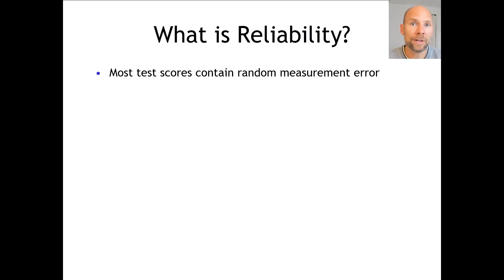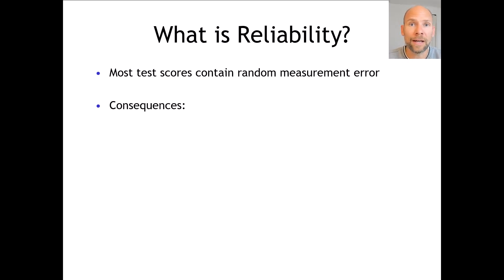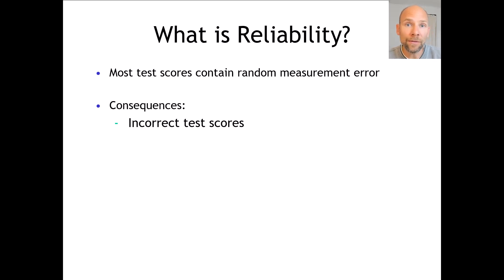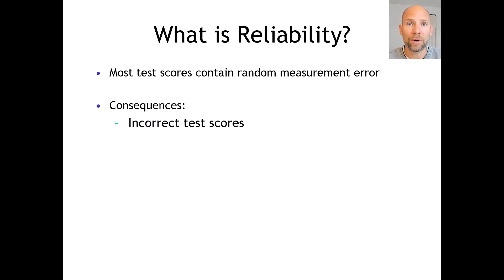In the following I will explain how that works technically based on classical test theory. Before we look at the theoretical foundation of reliability in classical test theory, I want to talk about some consequences of unreliability or random measurement error. One consequence is that test scores are more or less incorrect. For example, if we measure intelligence and individuals were not able to read the test problems, we might underestimate their true ability. Or if an item is worded unclearly, we may not get the right answer about a person's attitude. So incorrect individual test scores are a consequence of random measurement error.